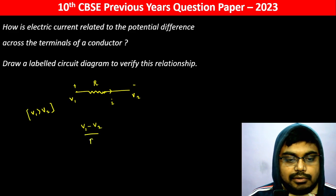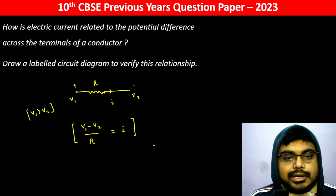Current flows from higher potential to lower potential. V1 minus V2 divided by R is equal to I. This is how current is related to the potential difference across it.